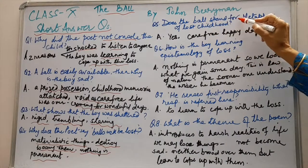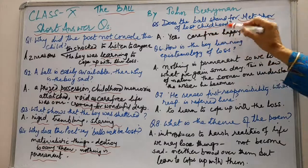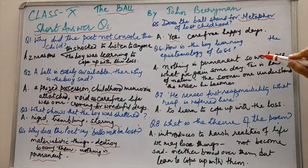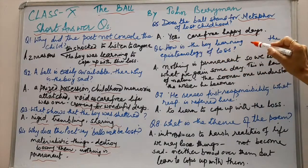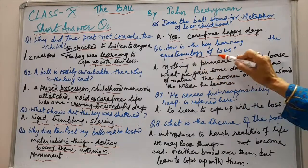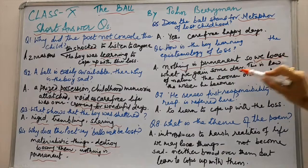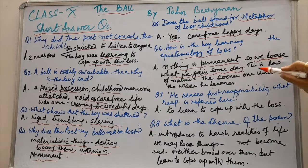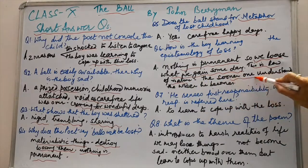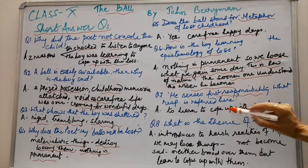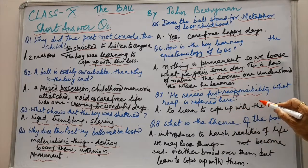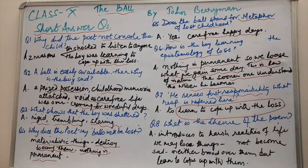Question number five: does the ball stand as a metaphor for lost childhood? Yes — the childhood memories were associated with the ball, and his carefree, happy days were lost with it. Question number six: how is the boy learning the epistemology of loss? The boy has understood that nothing is permanent in this world; we will lose whatever we gain someday. This is the law of nature, and the sooner one understands it, the wiser he becomes. Question number seven: he senses his first responsibility — what responsibility is referred to? The responsibility is to learn to cope up with the loss; the child has realized the harsh realities of life.